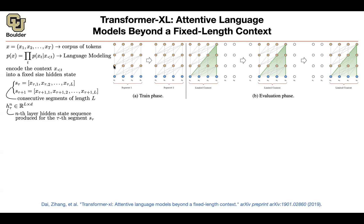So you have H1,1 and H1,2 and H1,3 for segment 1. And you have H2,1, H2,2, and H2,3 for segment 2. Forget about the SG — the stop gradients — for now. What we want is for these guys to pay attention to the entries from the previous segment as well. So we are going to concatenate along the sentence length, making the sentence two times larger — size 2L — so they pay attention not only to themselves but also to the previous segment.